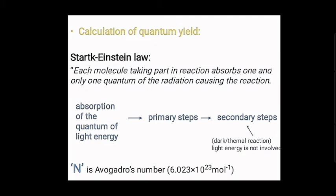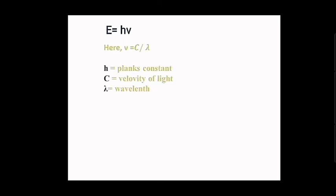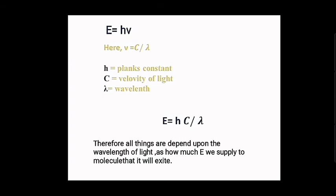One mole of reacting species will absorb N quanta of energy, where N is Avogadro's number, 6.023 × 10²³ per mole. The energy absorbed is given by E = hν, where h is Planck's constant and ν = c/λ, so c is the velocity of light and λ is the wavelength. The formula becomes E = hc/λ. Since h and c are constants, the energy is entirely dependent on the wavelength λ. Therefore, excitation of a molecule depends only on the wavelength of light used.